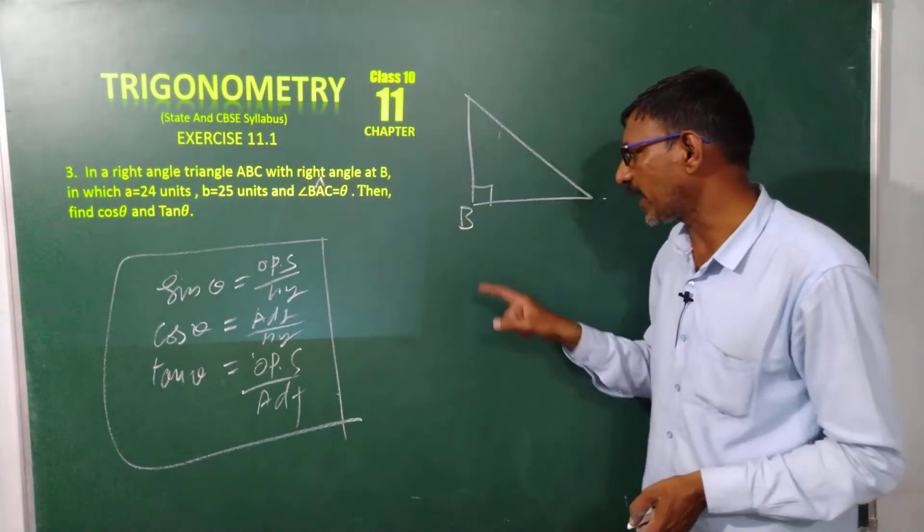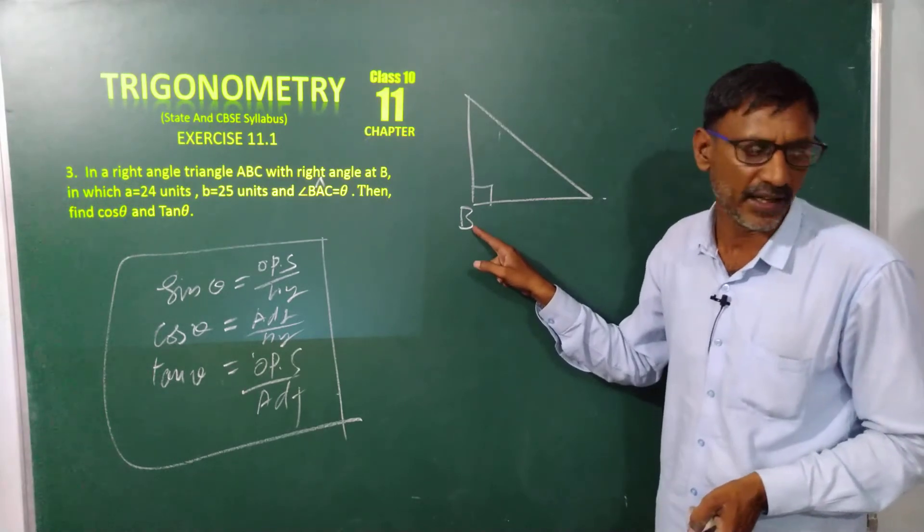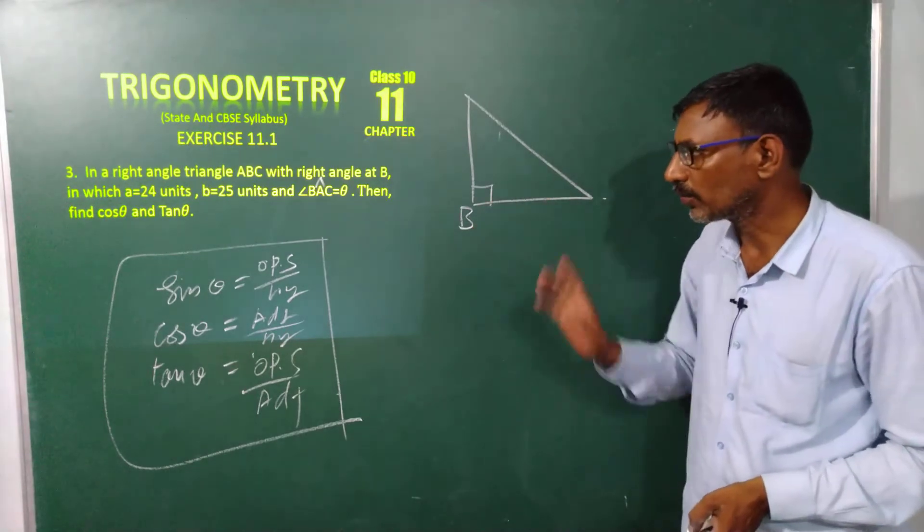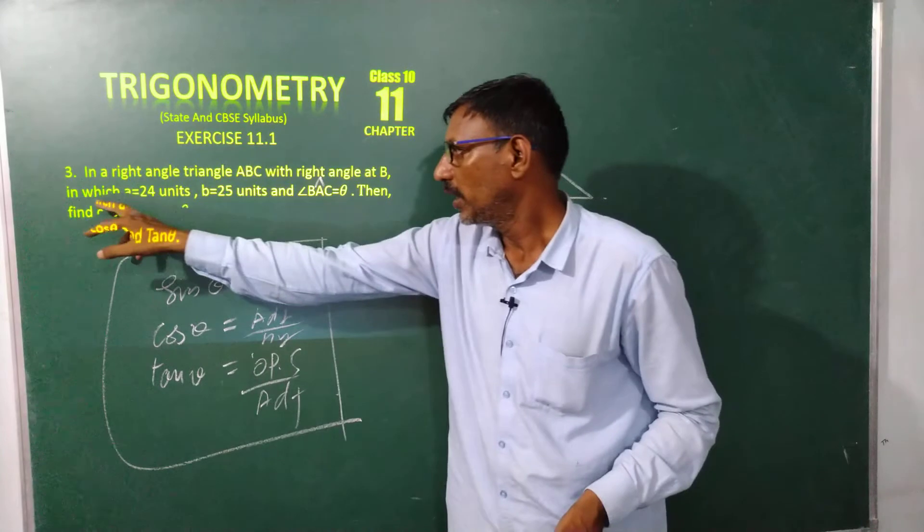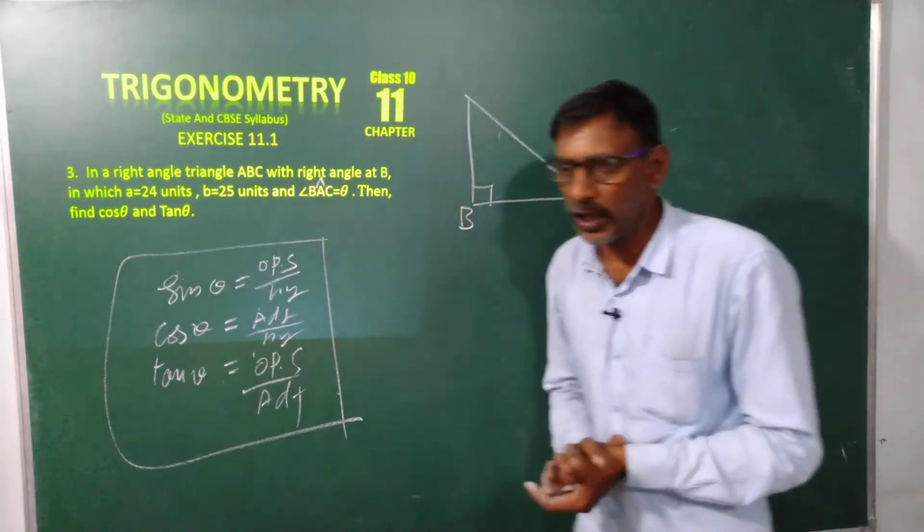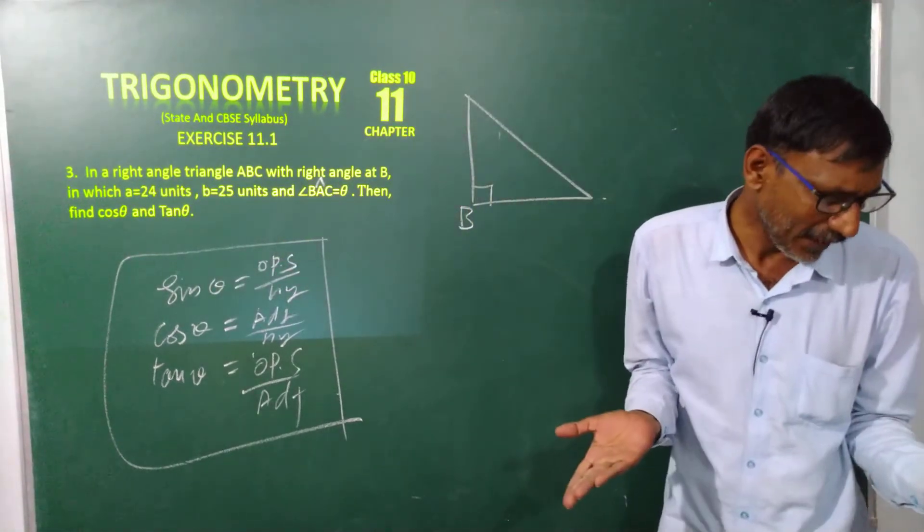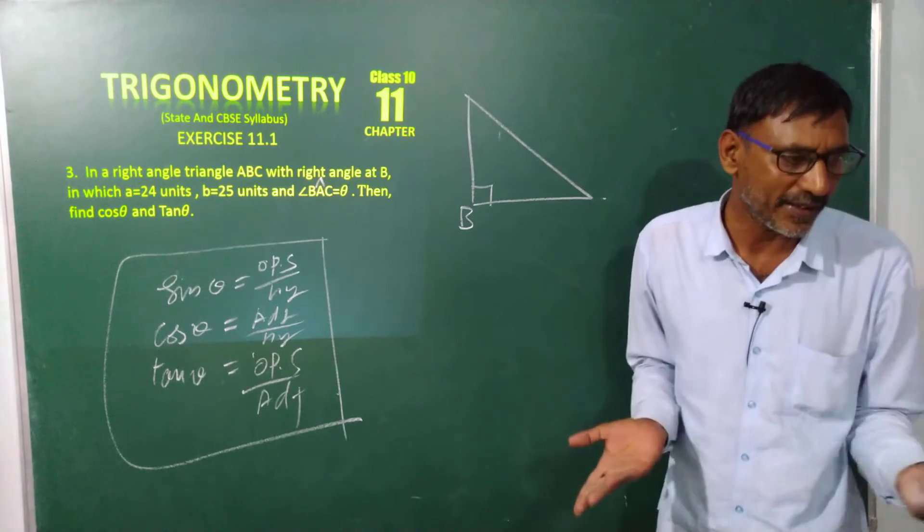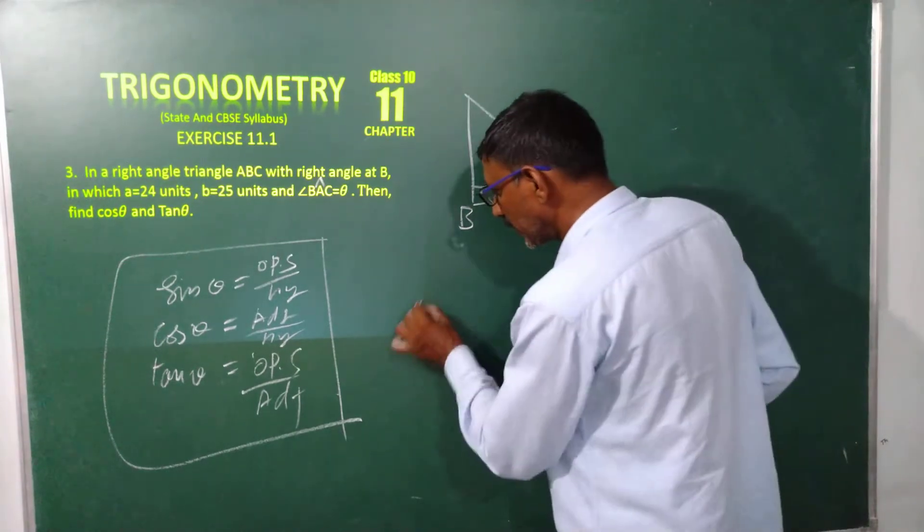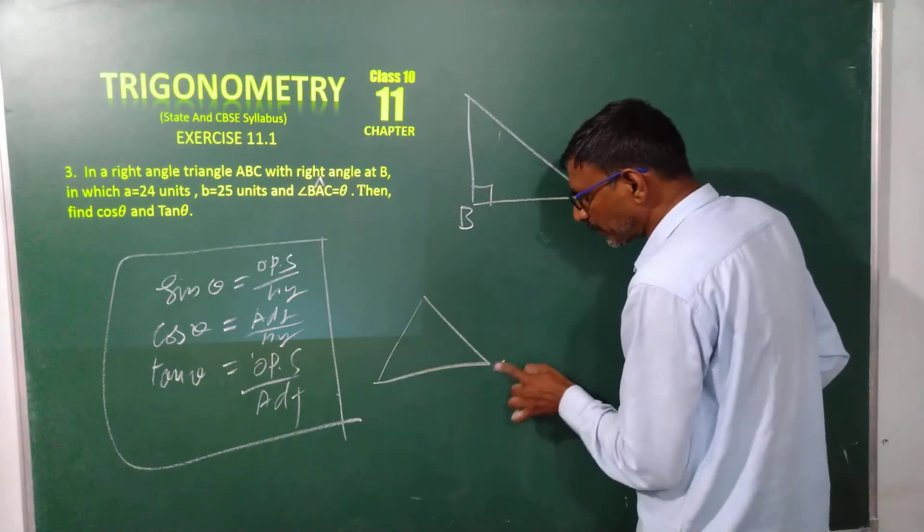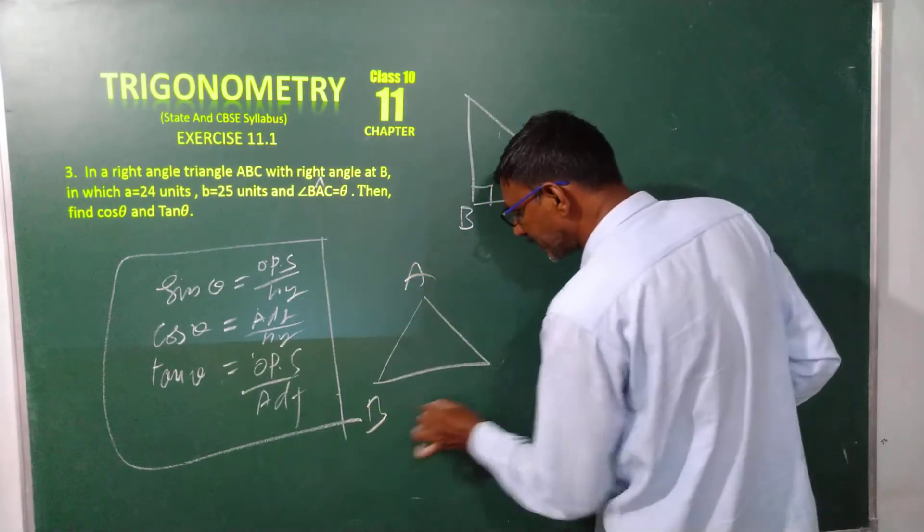Here angle B is 90 degrees, that's the reason here I take 90 degrees. Now, in which A is equal to 24 units. What is A? What is B? And what is C? This is very very important. In properties of triangles, this is my ABC triangle.